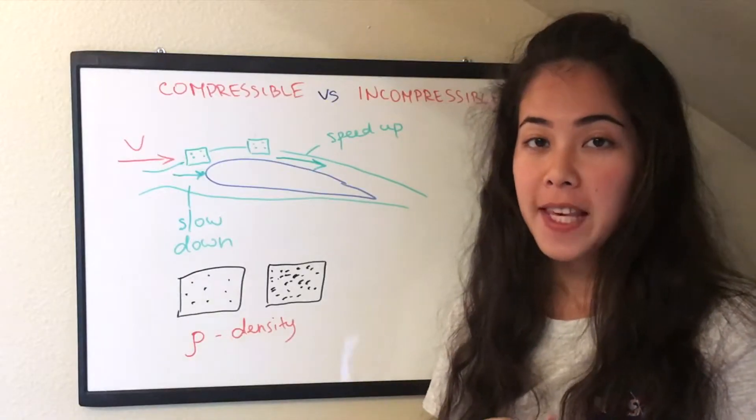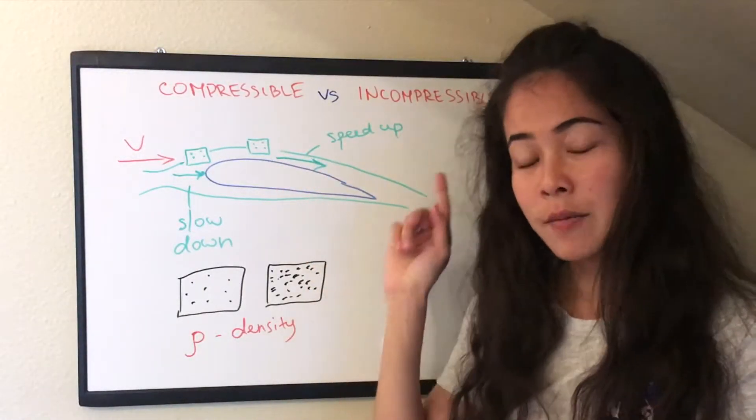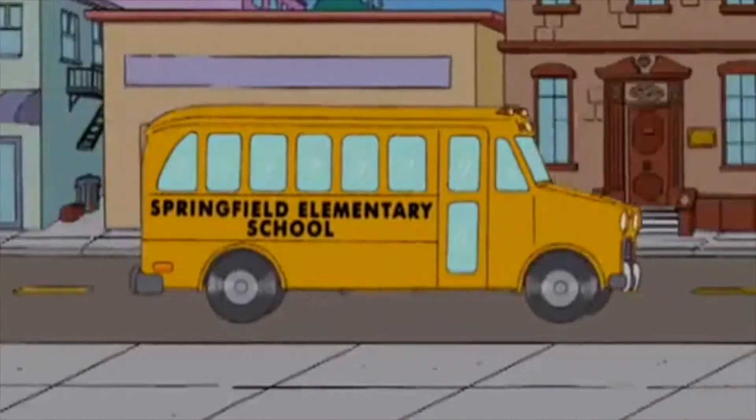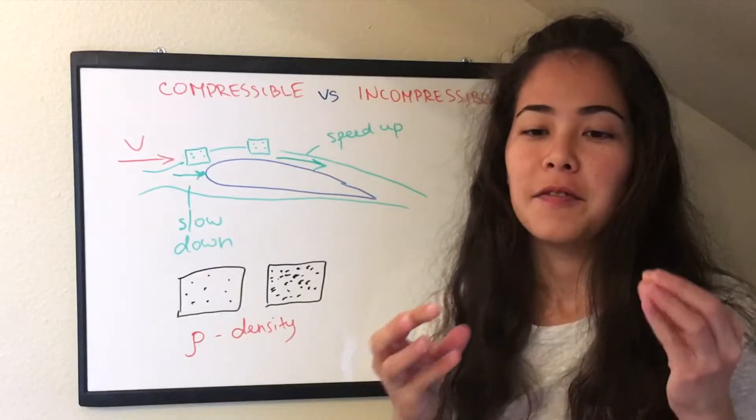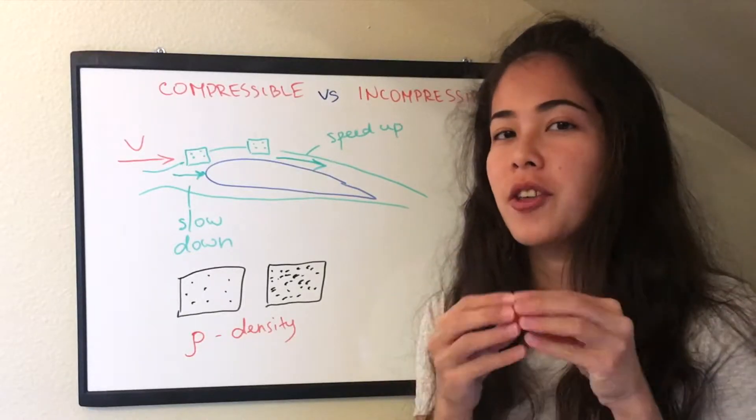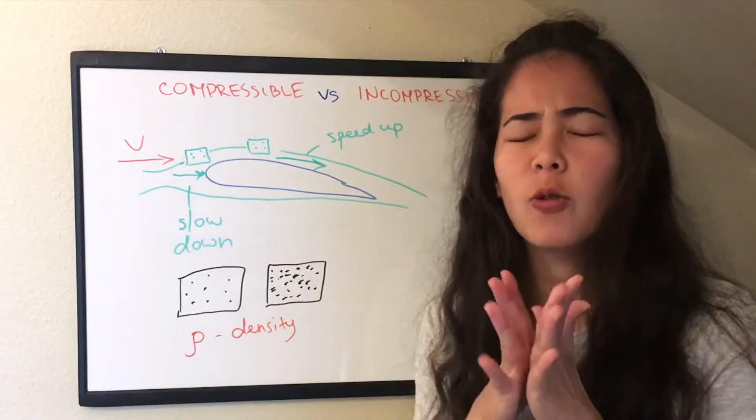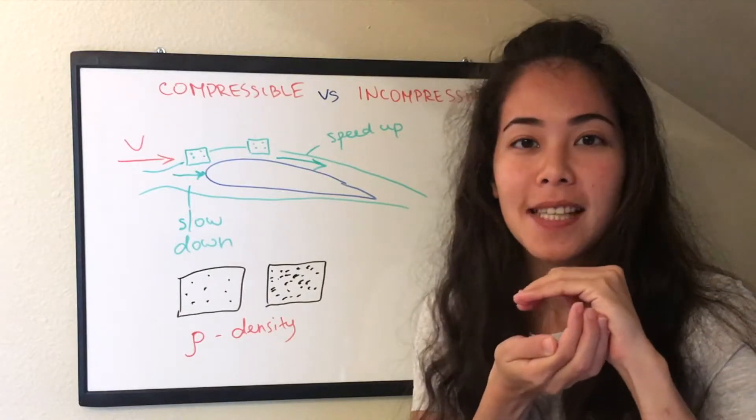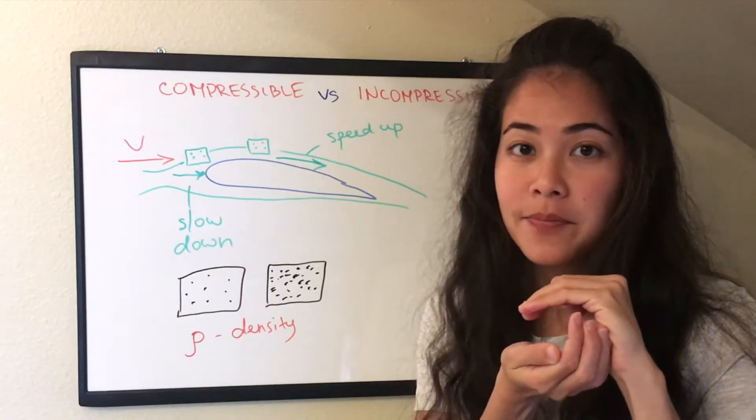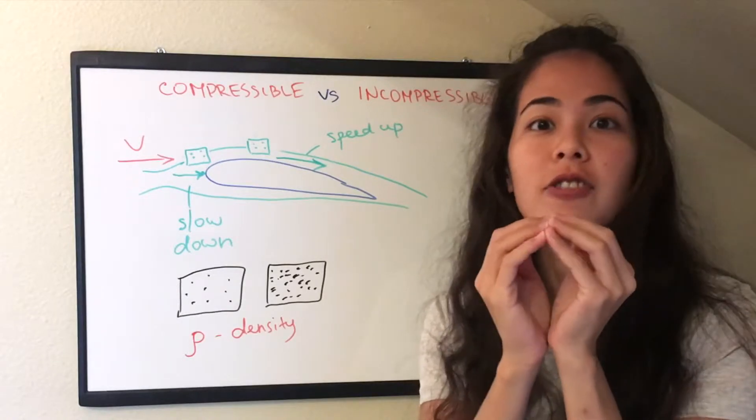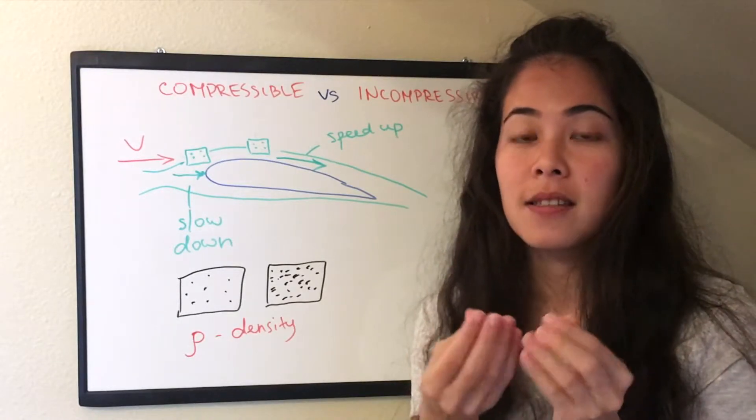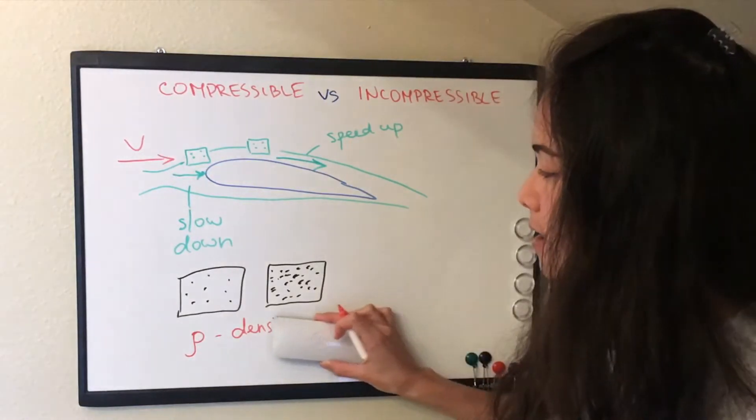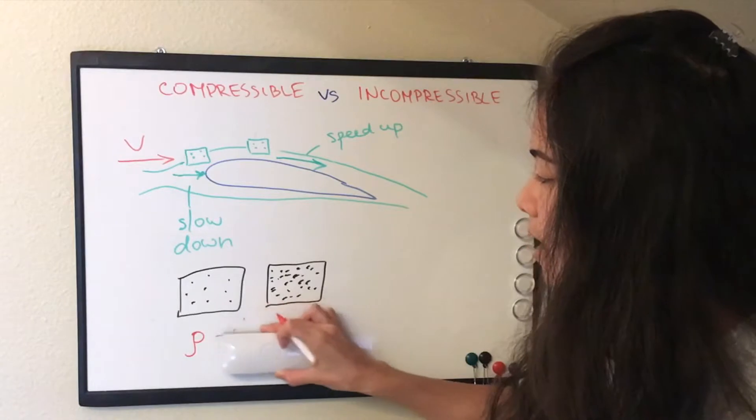So another way of thinking in order to understand compressible versus incompressible is I want you to think about a balloon filled with water. If you have a balloon with water, then no matter how you stretch it, squish it, squeeze it or do whatever, the amount of water inside the balloon stays the same and the balloon returns to its original shape. So that means the volume of water stays the same no matter what.